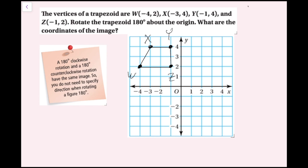Now that I've drawn the trapezoid, I'm going to rotate it. I'll go clockwise, and the center of rotation is the origin. For a 180° rotation, everything goes in the opposite direction: up goes to down, right goes to left. Starting with Z at (−1, 2): from the origin I go up 2 and left 1, so the image goes down 2 and right 1. I'll plot that as Z′.